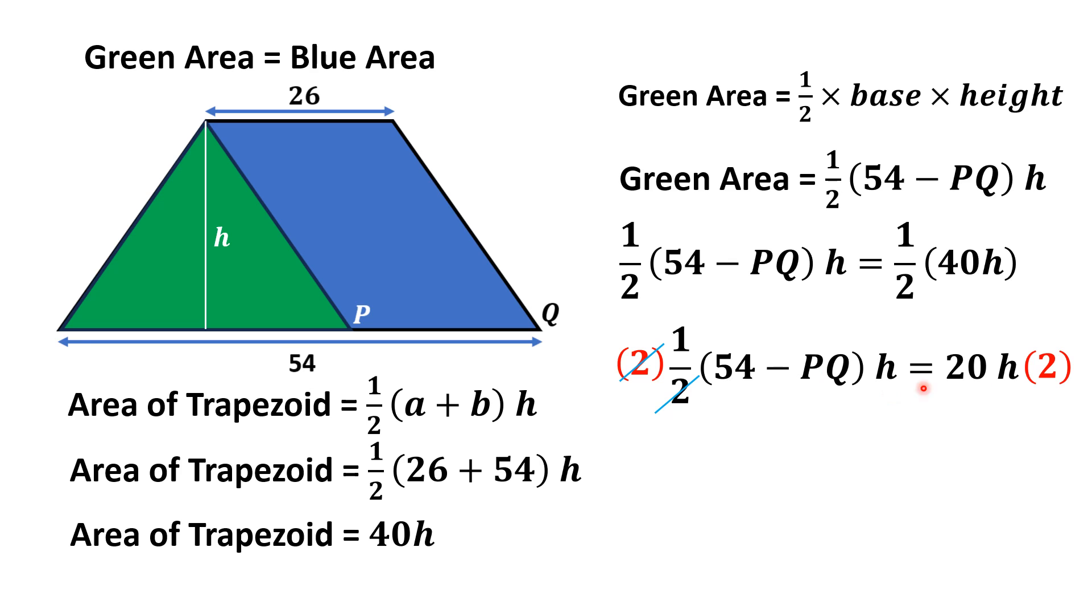h is a factor on both sides, it will also cancel. Thus we have 54 minus PQ equals 40. From here, we have PQ equals 14 units. That is the answer.